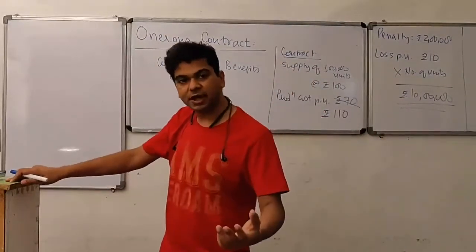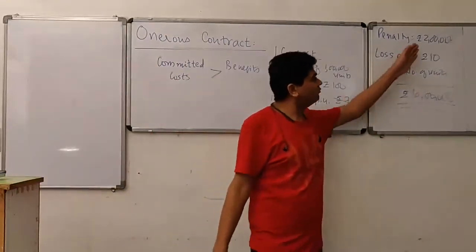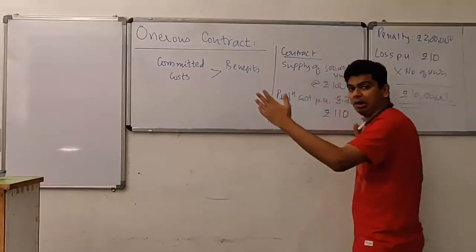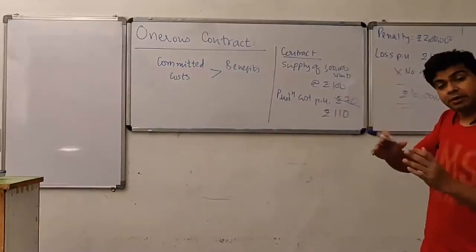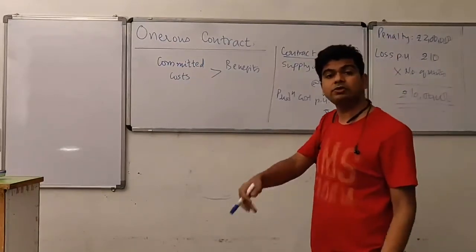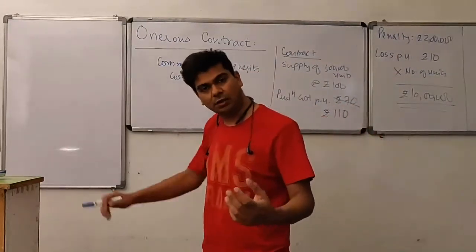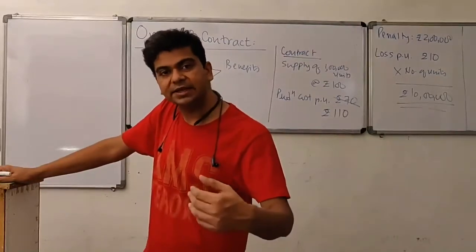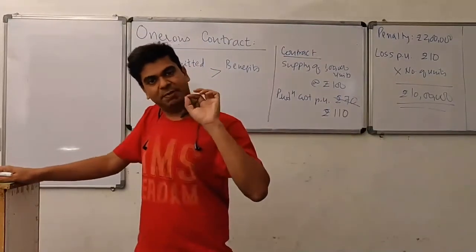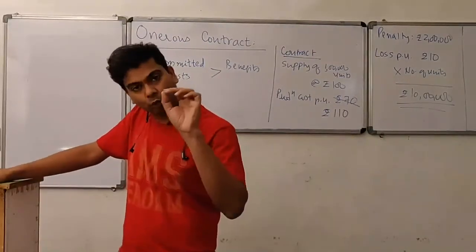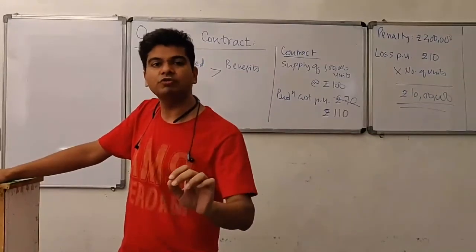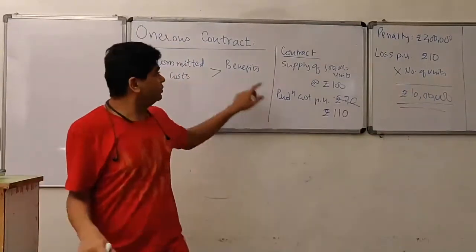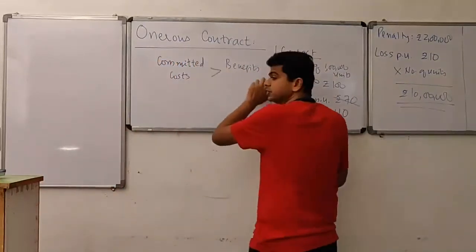So you have a choice: either pay a penalty of ₹2 lakhs and free yourself from the contract, or execute the contract and suffer a loss of ₹10 lakhs. Obviously you will prefer to pay the penalty and set aside the contract. This penalty that you are going to pay — you ought to recognize a provision for the same. This is nothing but a provision for an onerous contract.